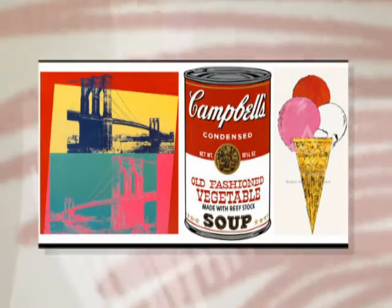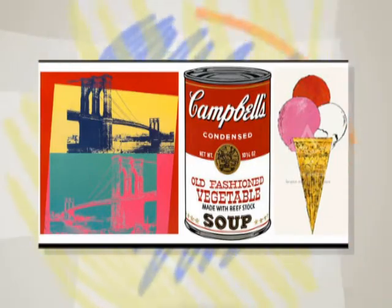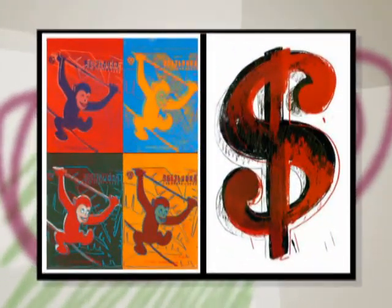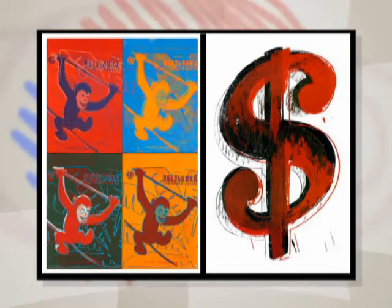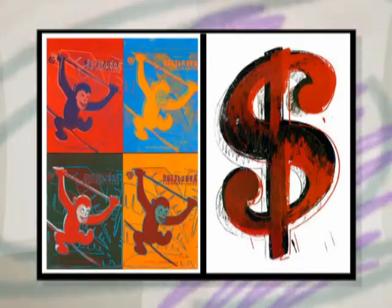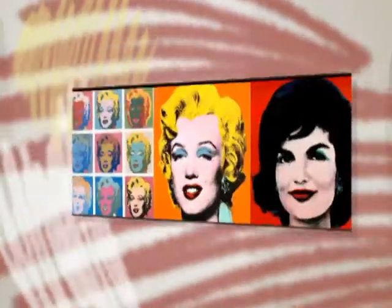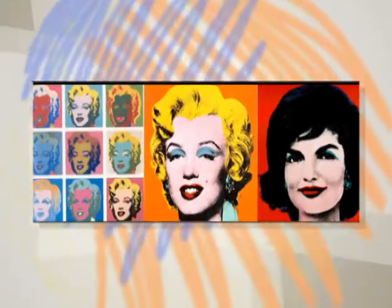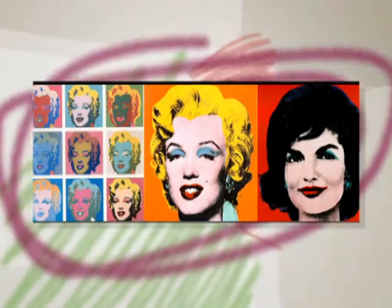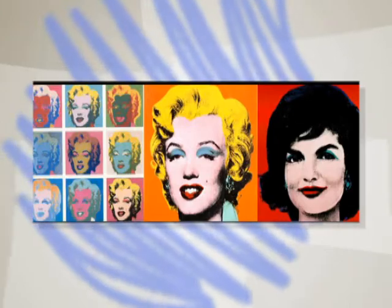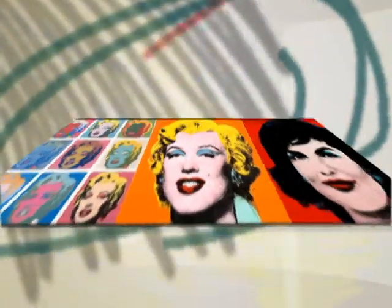Andy Warhol used the method of silk screen printing to create his artwork. A silk screen is a piece of mesh fabric held taut in a frame. Some of the holes in the fabric's mesh are clogged up to prevent the ink from passing through. When the silk screen is placed against a work piece, the ink is squeegeed across the screen surface, and ink is deposited wherever the screen was not clogged. Those of you that wear t-shirts with designs printed on them — that is called screen printing, and it's very similar to the same process that Andy Warhol used.